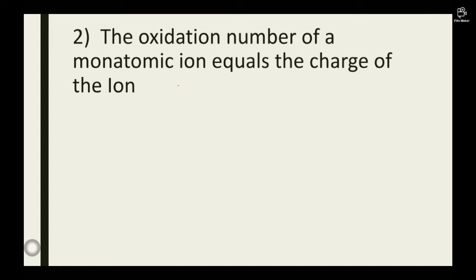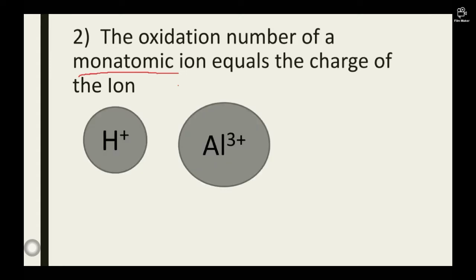Rule 2: The oxidation number of a monoatomic ion equals the charge of the ion. A monoatomic ion is an ion that consists of a single atom. Look at these ones: in H plus, you realize that it has only hydrogen as the only atom. Same applies to Al 3 plus and O 2 minus. Per our rule, the oxidation number of H plus will be plus 1, that of Al 3 plus would be plus 3, and that of O 2 minus will be minus 2 respectively.